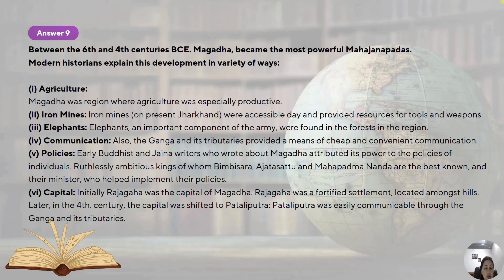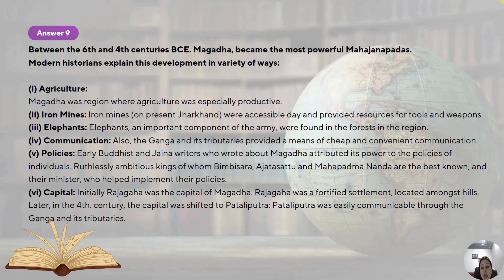Iron mines: there was no shortage of iron ore, as iron mines in present-day Jharkhand were accessible and provided resources for tools and weapons. Elephants served as an important component of the army; they were found in the forests and were mainly used for breaking fortified walls and gates. Communication: the Ganga and its tributaries provided means of cheap and convenient communication. Early Buddhist and Jain writers attributed Magadha's power to the policies of its ambitious kings like Bimbisara, Ajatashatru and Mahapadma Nanda. Initially Rajagriha was the capital of Magadha and later it was shifted to Pataliputra. Rajagriha was a fortified settlement between the hills, and Pataliputra was easily accessible through the Ganga and its tributaries, so the perfect location of the capital was also one of the reasons — nobody could attack them easily.